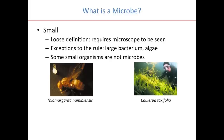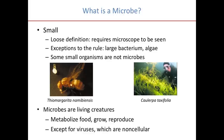This algae is Caulerpa taxifolia. In the 1980s, a zoo in Germany found a strain of this algae that thrives in cold water. They performed some selective breeding that made it even hardier, and then it escaped into the Mediterranean Sea. The problem is that it's crowding out native plants while being inedible to native species, and it's becoming an enormous problem in the Mediterranean.